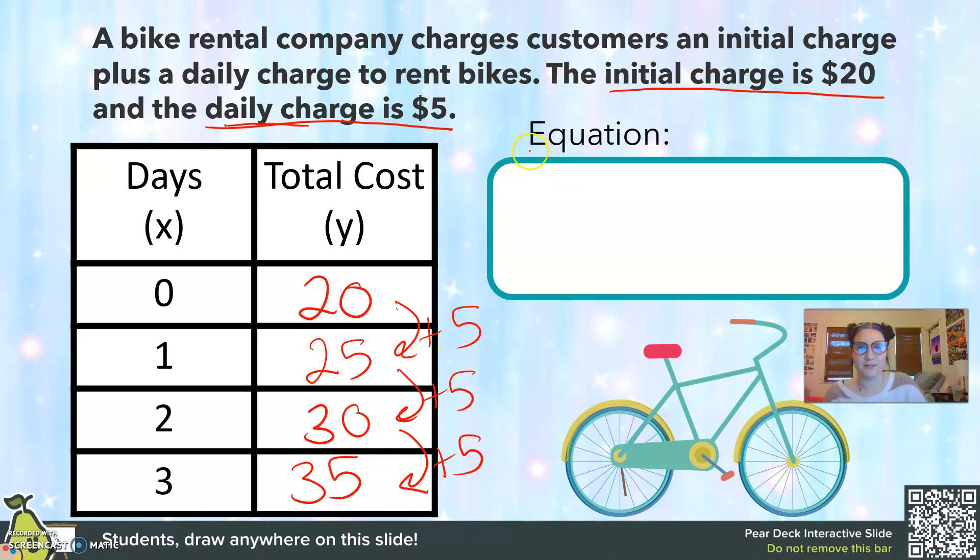Let's write an equation. My initial charge is $20. So nothing changes. That doesn't change. My recurring value is $5 per day. So $5 per day plus the $20 initial charge is going to equal the total cost. So y equals 5x plus 20.